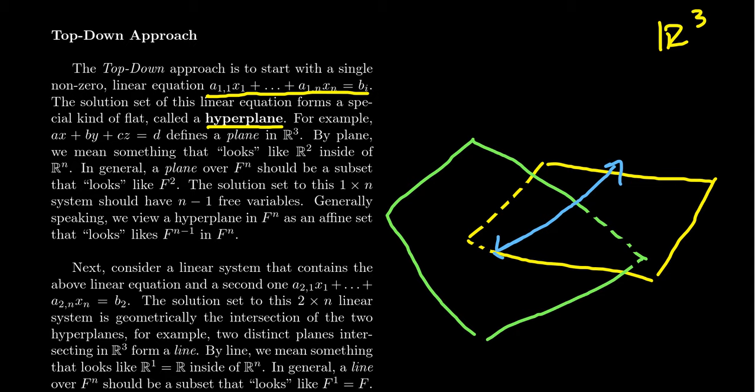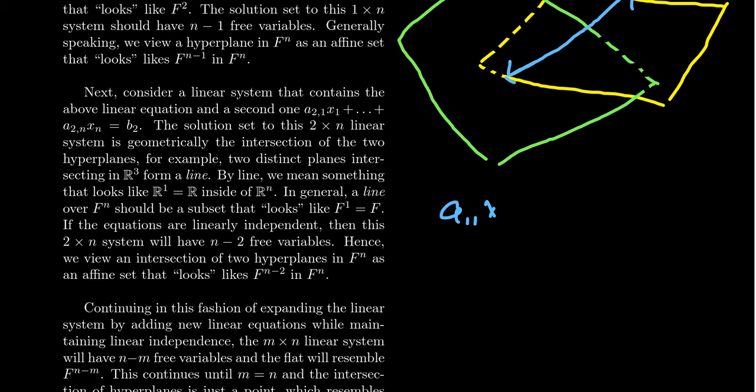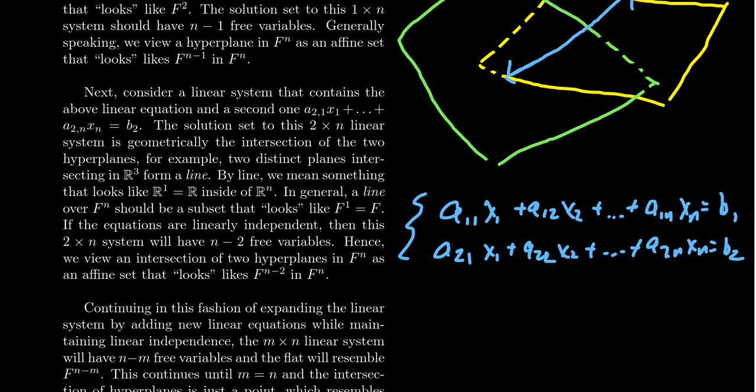So when we put the two equations together, let's imagine we have now this system of equations, where we had the first equation, a11x1 plus a12x2, all the way up to a1nxn equals something we'll call b1. We then throw in the second equation, a21x1 plus a22x2, all the way down to a2nxn equals b2. So when we look at this system of equations, two equations, n unknowns, we've now intersected two hyperplanes.